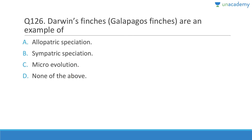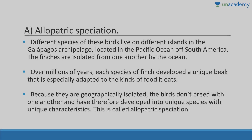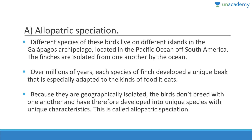Darwin's finches from the Galapagos are an example of allopatric speciation — there is a huge geographical barrier between different islands. The finches are isolated from one another by the ocean. Over millions of years, each species developed a unique beak adapted to its food. Because they are geographically isolated, the birds don't breed with one another and have developed into unique species — a typical example of allopatric speciation.